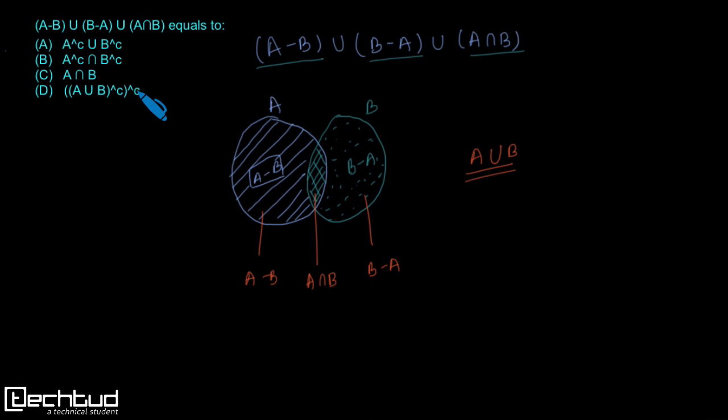In the options, these two complements are just to confuse you. We know that A dashed of dashed equal to A, right?